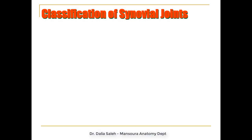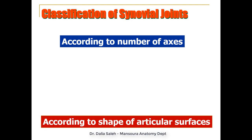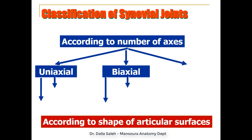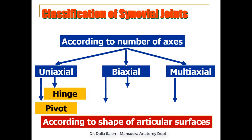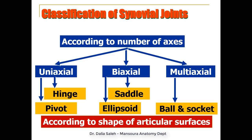For the classification of synovial joints, we can classify them according to the number of axes of movements or according to the shape of the articular surfaces. According to axes, we have uniaxial joints (movement around one axis), biaxial joints (movement around two axes), and multi-axial joints (movement around more than one axis). According to shape of articular surfaces, we have hinge and pivot joints (uniaxial), saddle and ellipsoid joints (biaxial), and ball and socket joints (multi-axial).